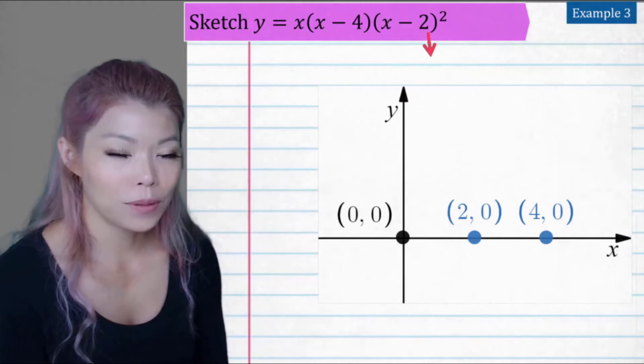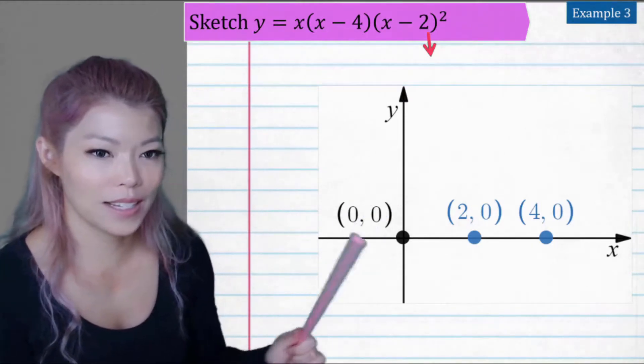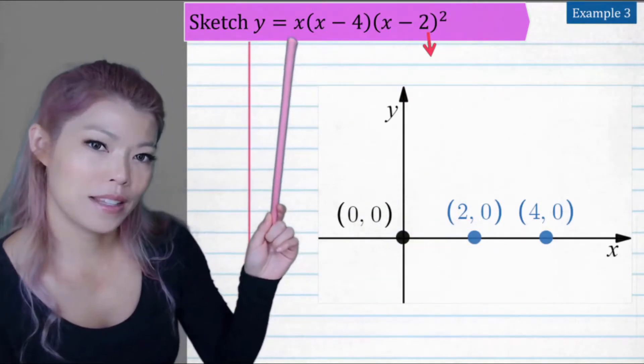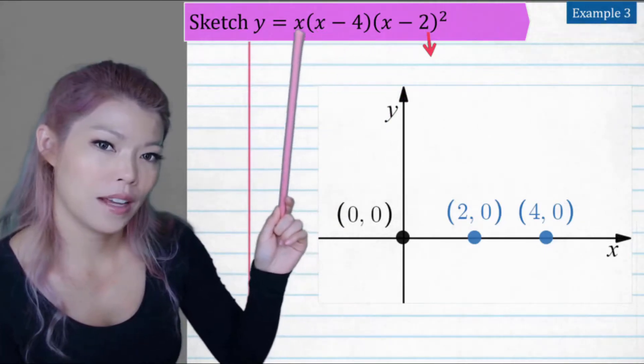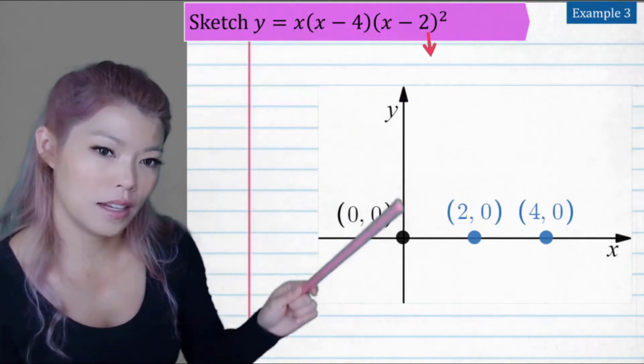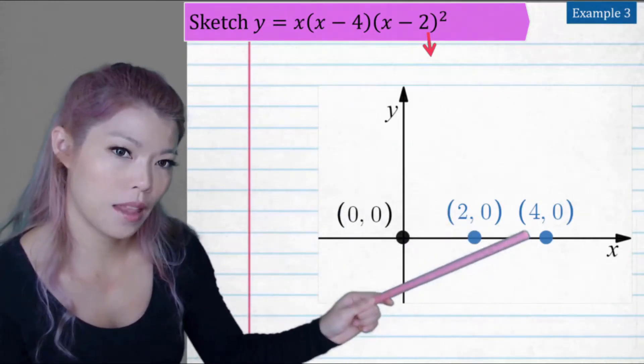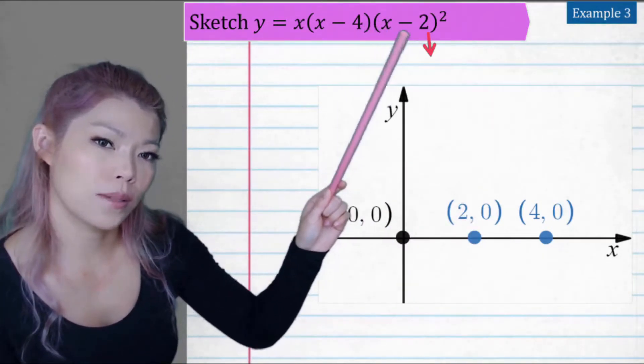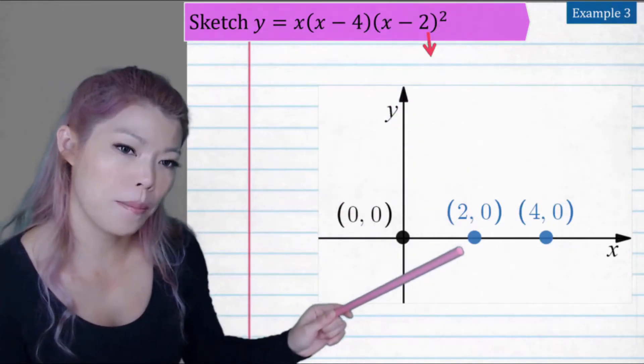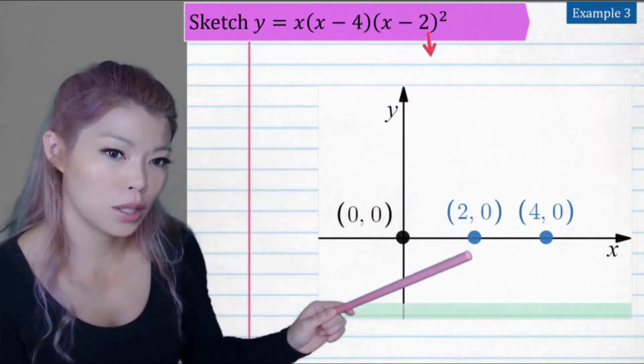Let's do another example. Oh, I started sketching already, ignore that. But we can see that here we have x equals 0 is an intercept. x minus 4, so the 4 is also an intercept. But the 2 for x minus 2, it's got a square, so that part there is going to be a turning point.